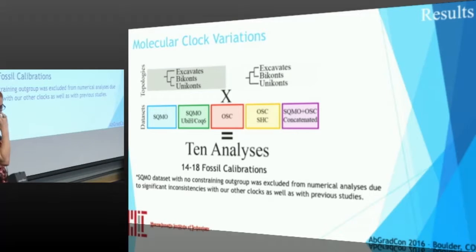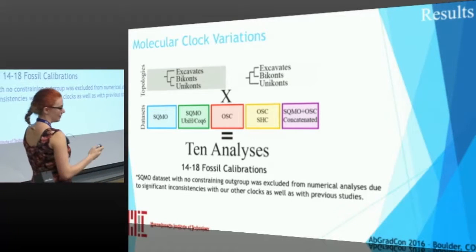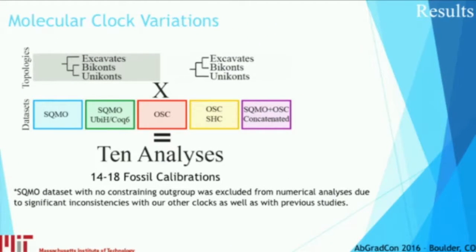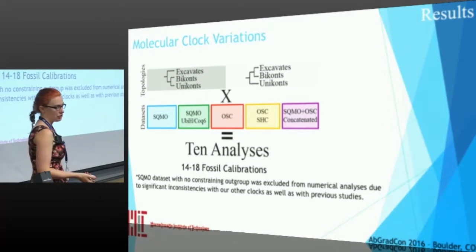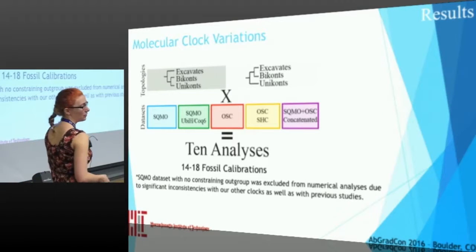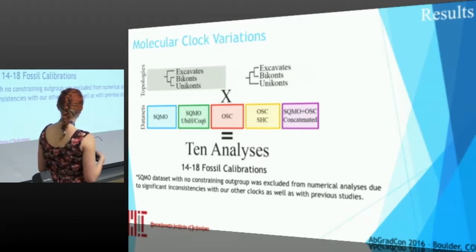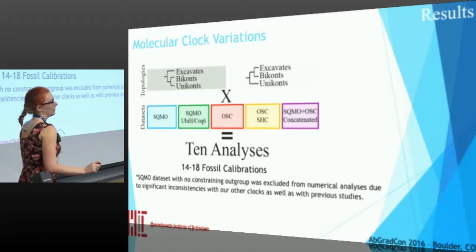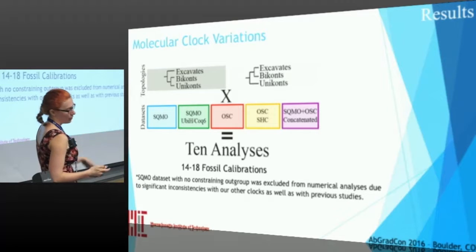We ended up doing 10 different analyses, looking at two different topologies, because there's some debate about whether excavates are basal to the other eukaryotes or sister to the bikonts. To cover all our bases, we did both topologies. We also looked at five different datasets: SQMO and OSC concatenated, SQMO by itself, SQMO constrained by an outgroup of genes from the ubiquinone biosynthesis pathway, OSC by itself, and OSC constrained by an outgroup of squalene hopene cyclase — its bacterial analog. Each analysis had between 14 and 18 fossil calibrations. We did exclude the SQMO-alone dataset from our numerical analyses because it was broadly inconsistent with our other analyses and with previous molecular clock work, and produced very old dates — adding a constraining outgroup or OSC data fixed the problem.